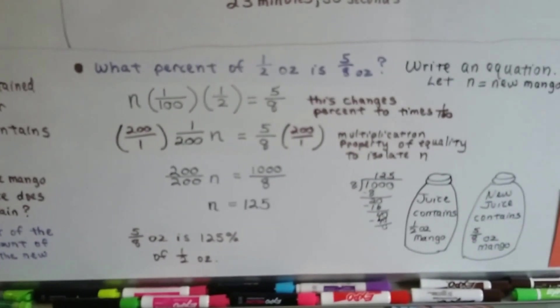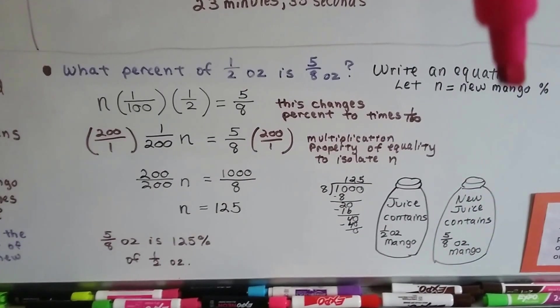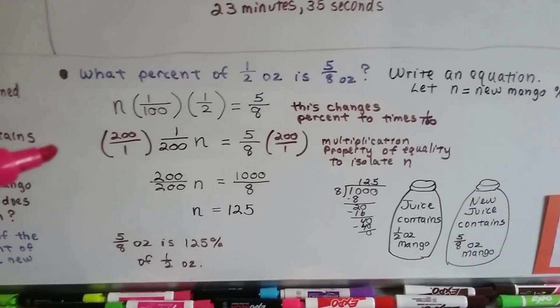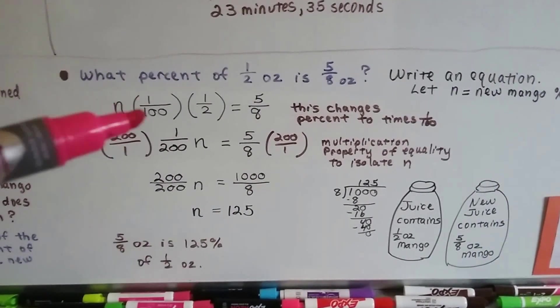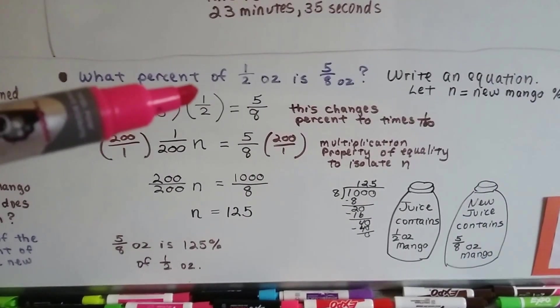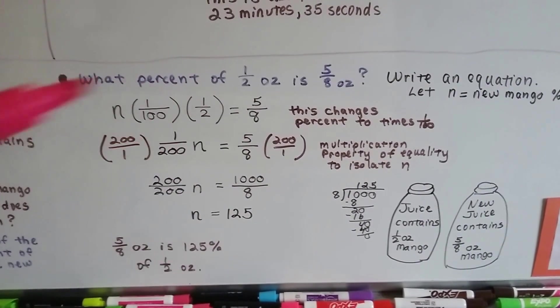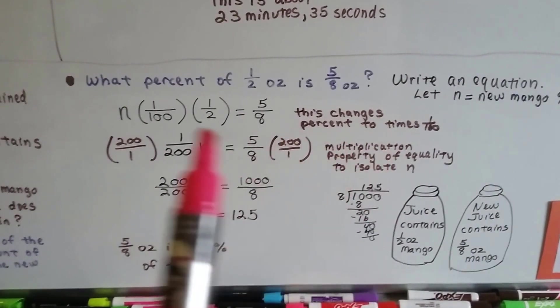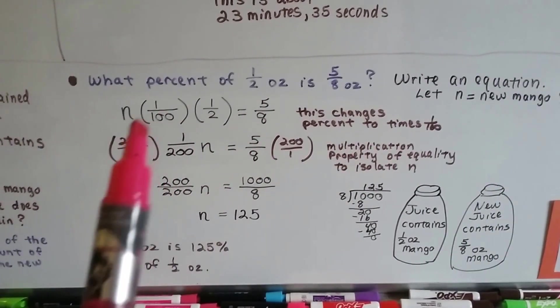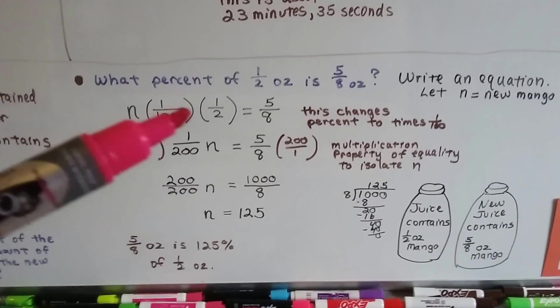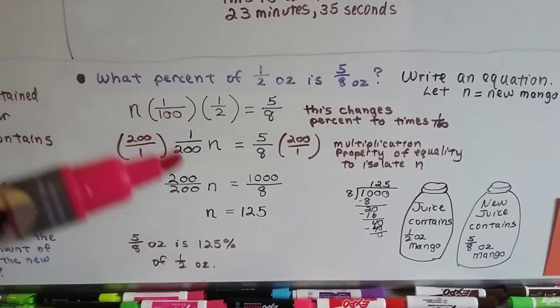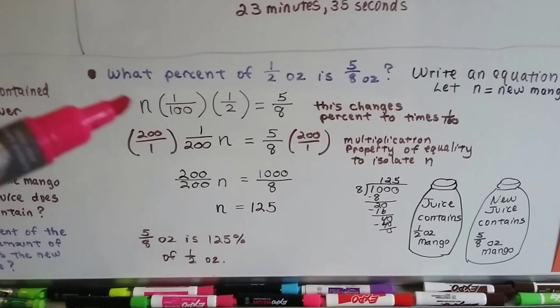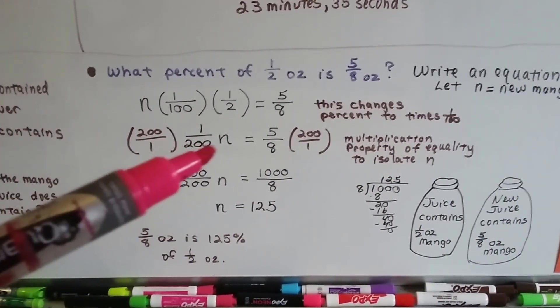We need to write an equation. So, we're going to let n equal the new mango percentage. We're going to do n times 1 100th times that half ounce. This is going to change the percent to times 1 100th. 1 100th times 1 half is 1 over 200. So, now we have 1 over 200 n from doing this part of the equation. And that's going to equal the 5-8.